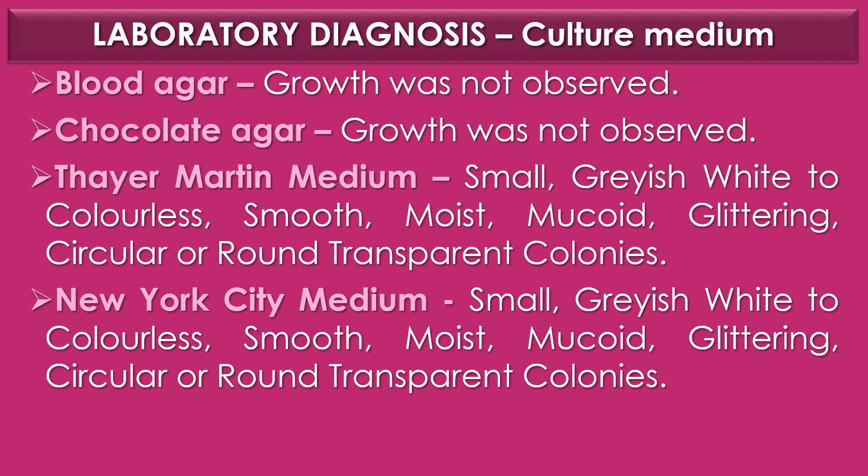The first selective medium is Thayer Martin medium and the second selective medium is New York City medium. In Thayer Martin medium, gonococci are observed as small, grayish-white to colorless, smooth, moist, mucoid, glittering, circular or round, and transparent colonies. In the Thayer Martin medium, Thayer and Martin used vancomycin, colistin, and nystatin.